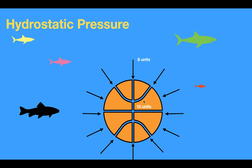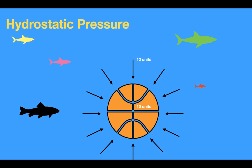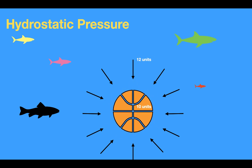And that's because the pressure inside is greater than the pressure outside. Now what if we were to increase the pressure outside to around 12 units? Well, since the pressure outside is greater than the pressure inside, the ball would collapse.